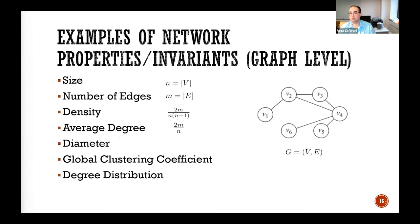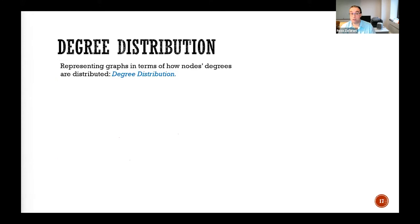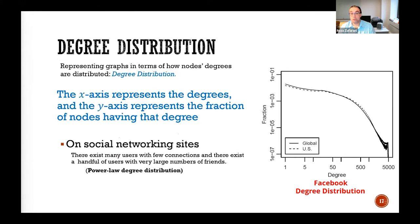At the graph level, you can measure many simple things: the size of the graph, how many edges it has, the density, average degree, the diameter, the global clustering coefficient, number of triangles. Or you can look at the degree distribution — how degrees in the graph are distributed — where the x-axis is the degree and y is the fraction of nodes having that degree.